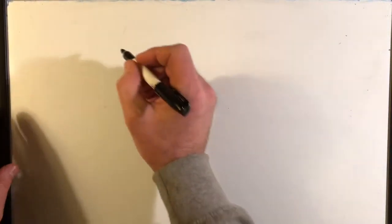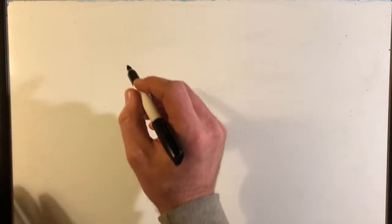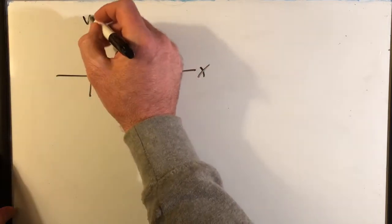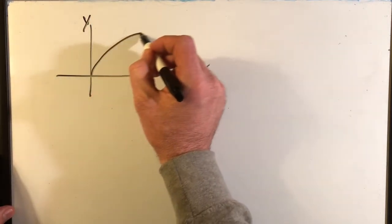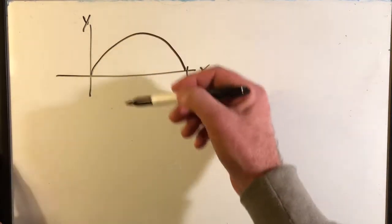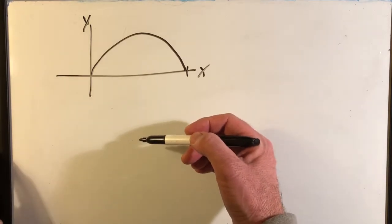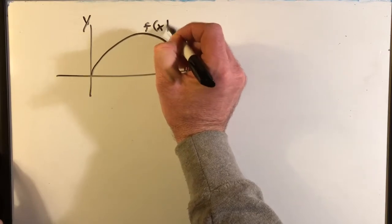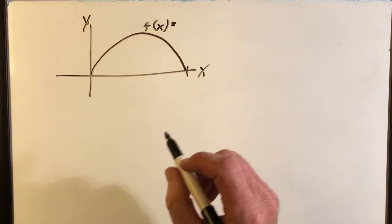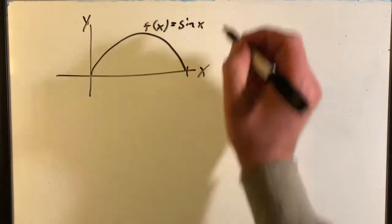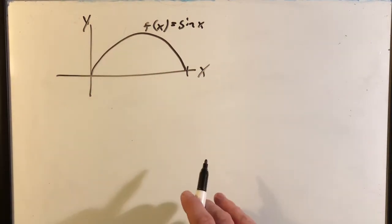So real quickly, let's suppose you always see lots of examples where you're rotating around the x-axis or y-axis. You have some sort of curve, and typically they say rotate that curve around the x-axis, where this would be your f of x equals something. In this case, we can say that f of x equals sine x. That's a pretty good representation of that.